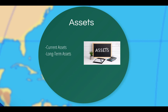Assets are what a company owns and come in two main forms. Current assets, that can be easily converted to cash, such as stock. And long-term assets that have a useful life of more than a year, such as a company-owned warehouse. It is important to keep in mind that inventory can represent a significant part of an organization's current assets.